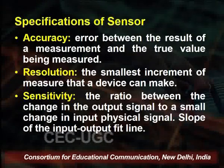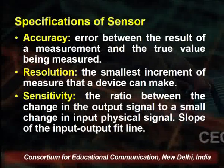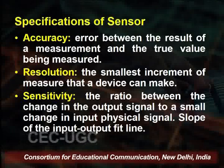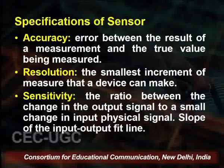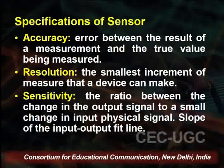Now, what are the specifications required for a sensor? First is accuracy — the error between the result of the measurement and the true value being measured. For example, if measuring room temperature, the sensor output must be accurate. Second is resolution — the smallest increment of the measurand that a device can detect. Resolution also plays an important role in sensor preparation.